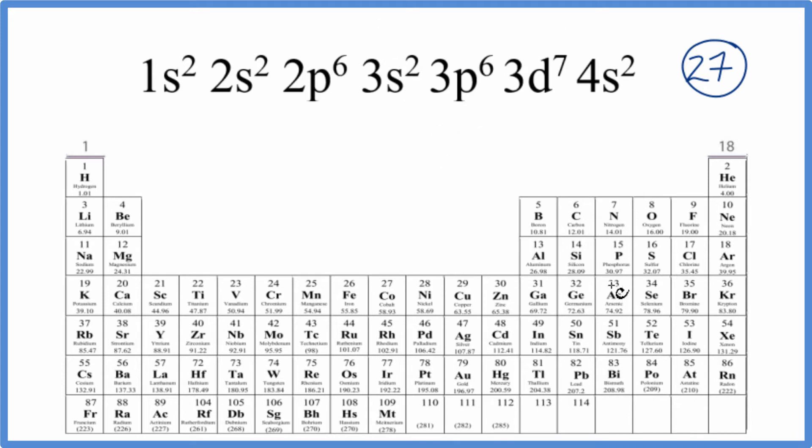On the periodic table, if we look at the elements here, we'll see that the atomic number. This is the atomic number. It equals the number of protons and all the elements on the periodic table are neutral. You don't see a negative or a positive sign after them.